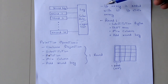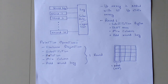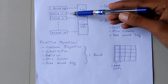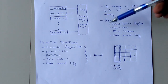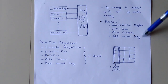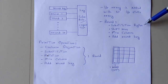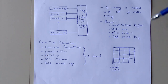We use the round key to perform AddRoundKey on the input state array. In round processing, the first transformation is SubBytes, where we substitute each byte using a lookup table called the S-Box, which stands for Substitution Box.